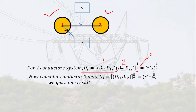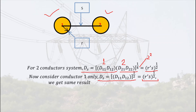Putting in the values of D11, D12, D21, and D22, we get r-dash times s, under root of r-dash s. Now if we consider conductor one only, the self-GMD equals D11 times D12, to the power one-by-two, which again equals under root of r-dash s. So we get the same self-GMD whether we take distances with respect to both conductors or with respect to conductor one only.